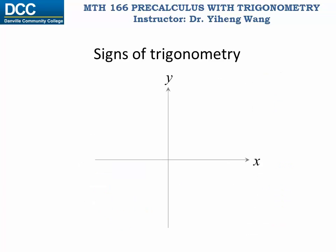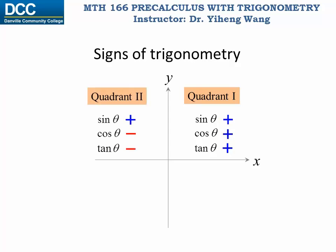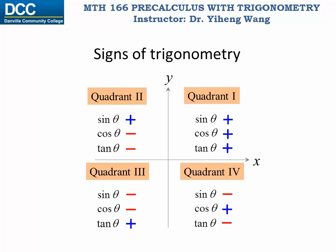As a summary: for the first quadrant, sine, cosine, tangent, and the other three — cosecant, secant, and cotangent — all six trigonometric function values are positive. Quadrant two: sine is positive, cosine and tangent are both negative, and the reciprocal functions have the same signs. Quadrant three: sine is negative, cosine is negative, but tangent is positive. Lastly for quadrant four: sine is negative, cosine is positive, and tangent is negative. This summary is very useful to determine the trigonometric function values of a given angle based on the location of its terminal side.